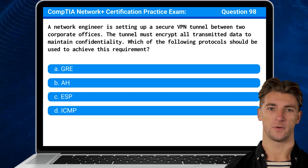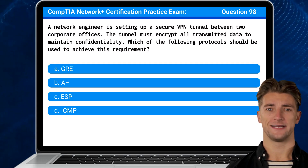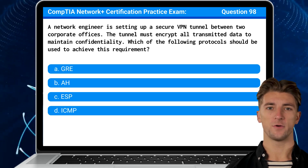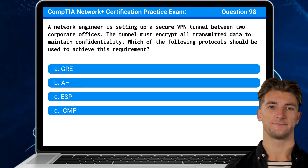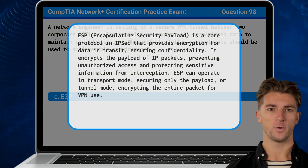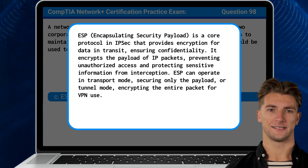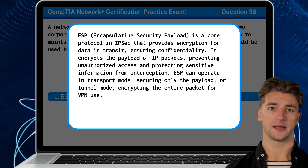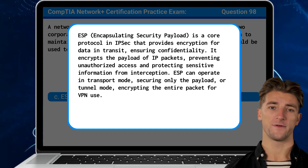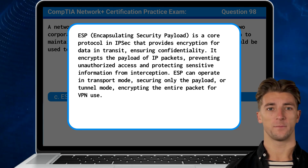Question 98. A network engineer is setting up a secure VPN tunnel between two corporate offices. The tunnel must encrypt all transmitted data to maintain confidentiality. Which of the following protocols should be used to achieve this requirement? The answer is C. ESP. ESP or Encapsulating Security Payload is a core protocol in IPsec that provides encryption for data in transit, ensuring confidentiality. It encrypts the payload of IP packets, preventing unauthorized access and protecting sensitive information from interception. ESP can operate in transport mode, securing only the payload, or tunnel mode, encrypting the entire packet, for VPN use.